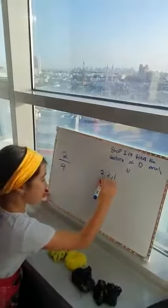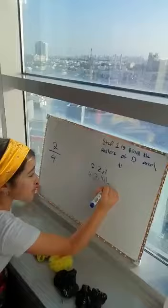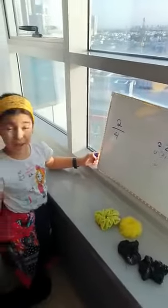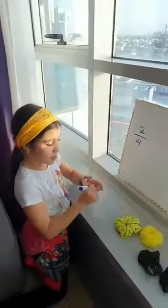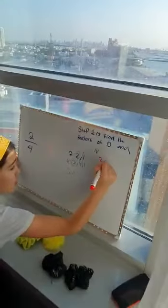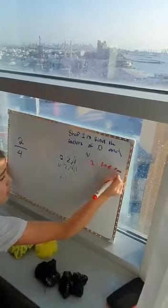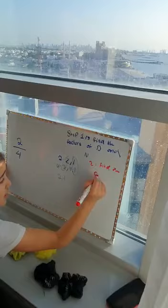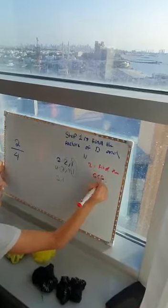Now we're going to find the common factors — common factors means the same numbers. Here's two and here's one — these are the common factors. Now I'm going to find the greatest common factor, and this is step two.